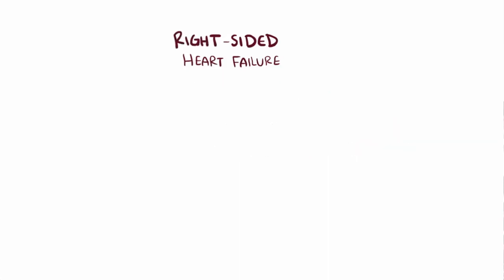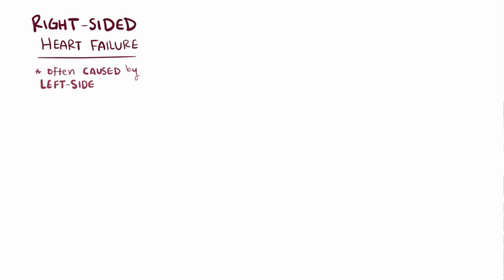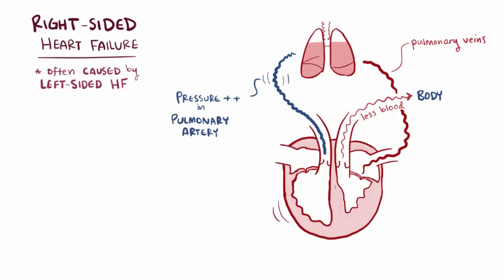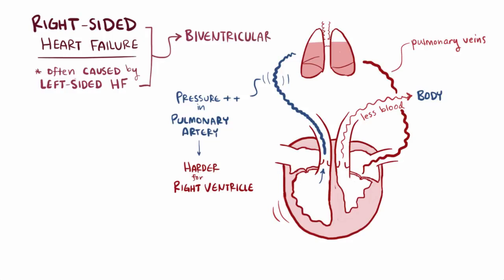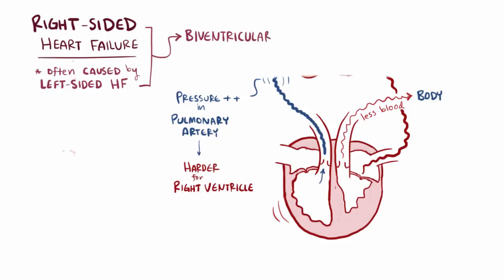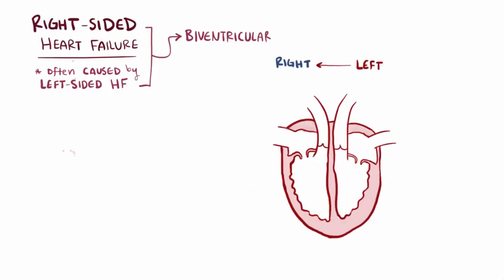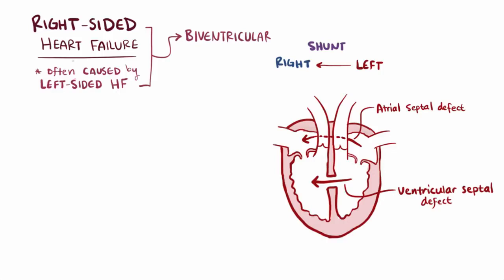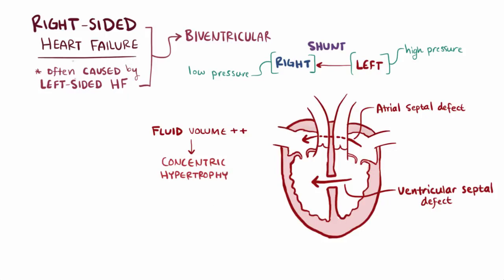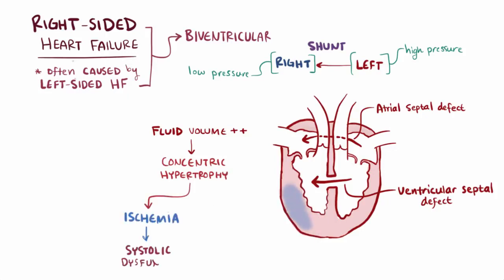Now let's switch gears and think about right-sided heart failure, which is actually often caused by left-sided heart failure. Remember how fluid buildup increased the pressure in the pulmonary artery? That increased pulmonary blood pressure makes it harder for the right side to pump blood, making the heart failure biventricular. Someone can also have isolated right-sided heart failure — an example would be a left-to-right cardiac shunt, such as an atrial septal defect or a ventricular septal defect, that allows blood to flow from the higher pressure left side to the lower pressure right side. This increases fluid volume on the right side and can eventually lead to concentric hypertrophy of the right ventricle, making it more prone to ischemia — a systolic dysfunction — and cause a smaller volume and less compliant chamber, which is a diastolic dysfunction.